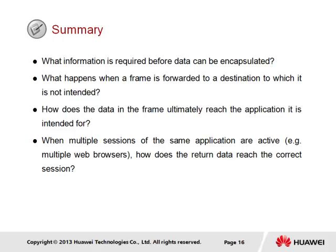How does the data in the frame ultimately reach the application it is intended for? The destination port number in the TCP and UDP headers provides the port information necessary to reach the intended service or application, and allows any data to reach its intended destination.